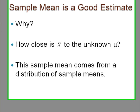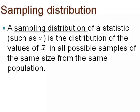For your information, a sampling distribution of a statistic such as x-bar is the distribution of the values of x-bar in all possible samples of the same size from the same population.